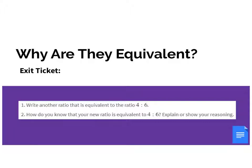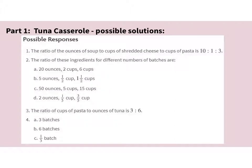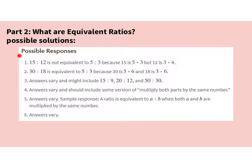The exit ticket you can answer at the bottom of your student worksheet, and you can also post it at the bottom of the Schoology page. You can pause the video and go through the lesson summary, and check the answers that you and your group members did for part one, the tuna casserole, and for part two, what are equivalent ratios.